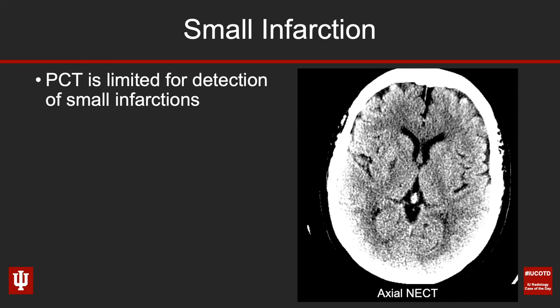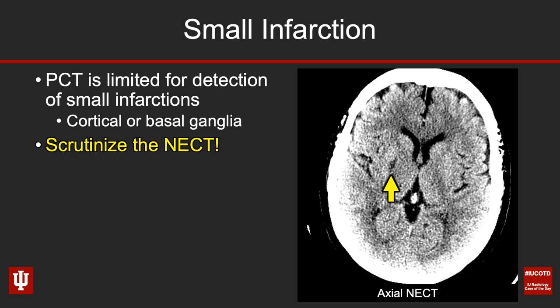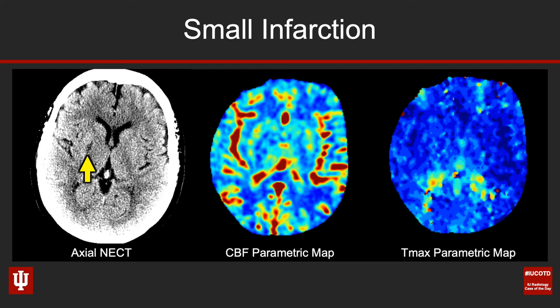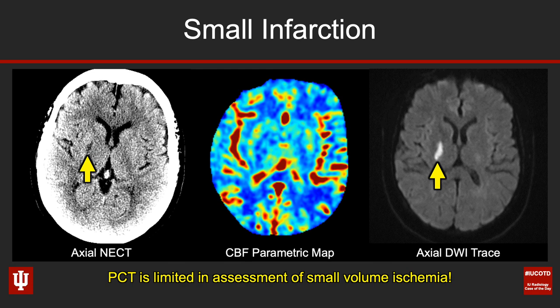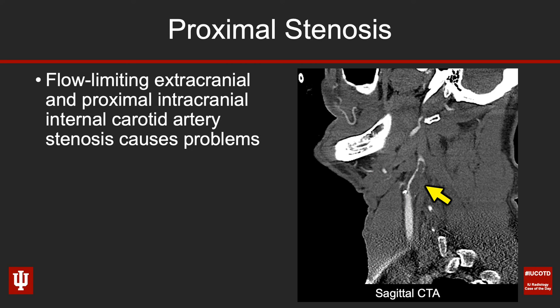Perfusion CT is not great for looking at small volume infarctions, whether cortical or basal ganglia. You really need to scrutinize the non-contrast CT. Here's an example showing focal hypoattenuation within the right basal ganglia, but the CBF and Tmax look pretty reasonable — yet this was confirmed as an acute infarction on diffusion-weighted imaging. Perfusion CT is limited in its assessment for small volumes of ischemia.